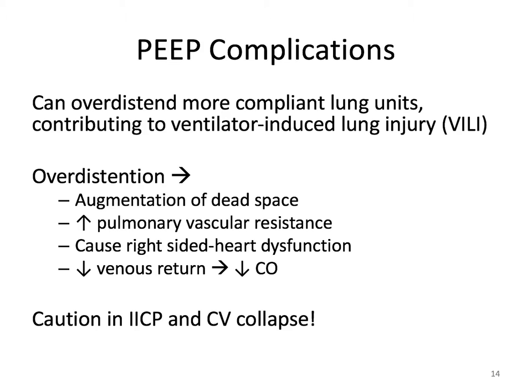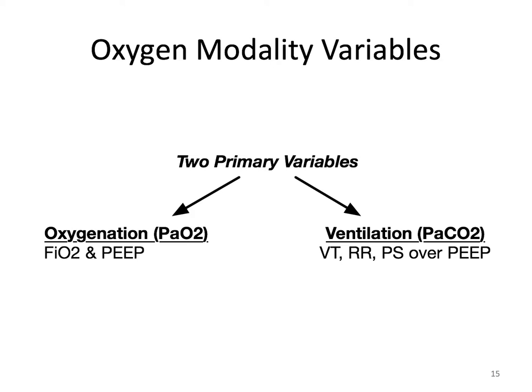So we've discussed FiO2 and PEEP. The remaining variables are relatively straightforward. Tidal volume (VT) focuses on the volume of air the patient receives. Pressure support (PS) is the pressure the patient receives. The respiratory rate (RR) is simply the rate at which the patient is set to breathe. If you want more oxygenation, or PaO2, you can increase FiO2 or increase the functional portion of the lung at end expiration by increasing PEEP. If you want more ventilation, give the patient more volume or pressure, or increase the respiratory rate.